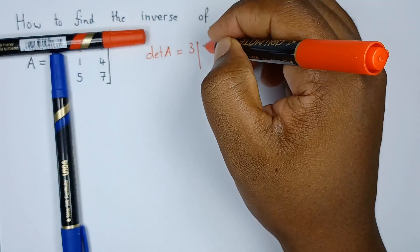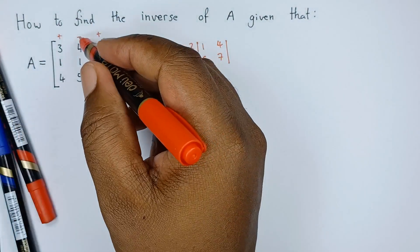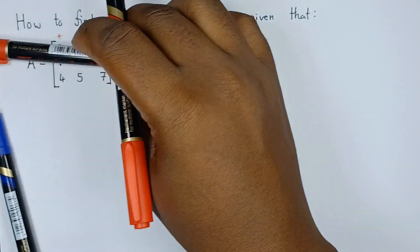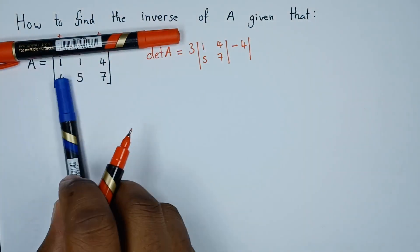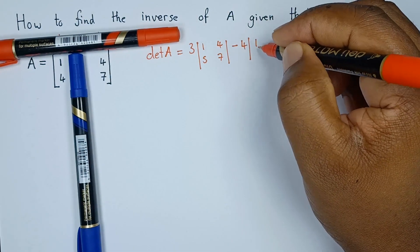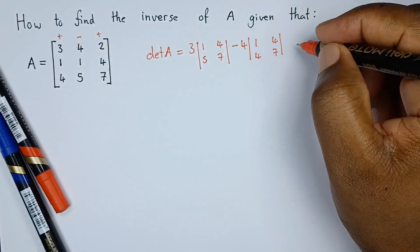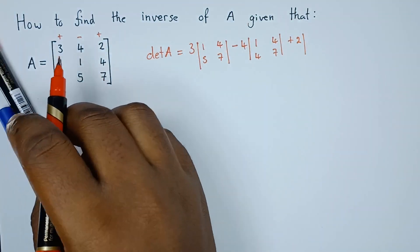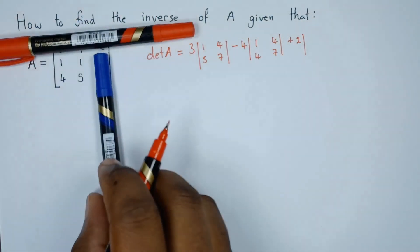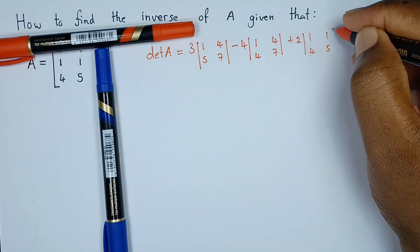What remains is 1, 5, 4, 7. The next element is minus 4, so minus 4. Hiding the row and column for 4, the 2x2 formed is 1, 4, 4, 7. And lastly the last value is 2, so plus 2. The 2x2 formed will be 1, 1, 4, 5.